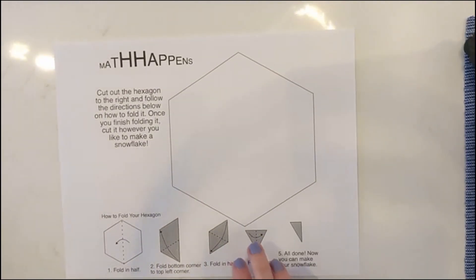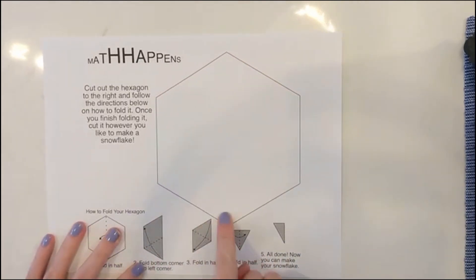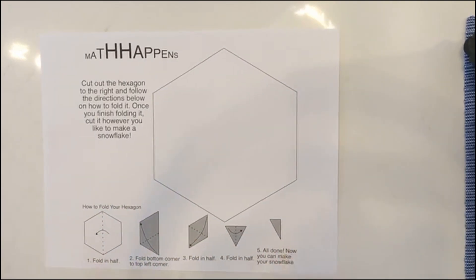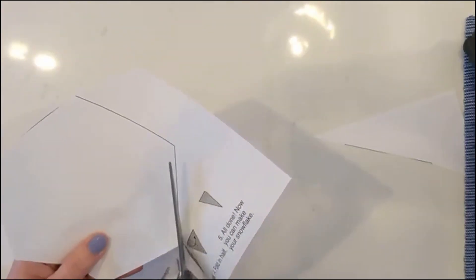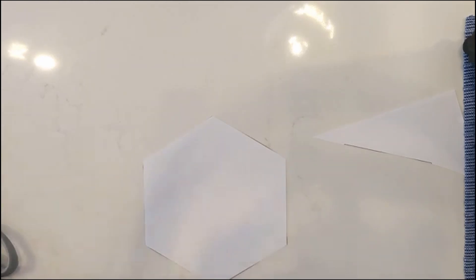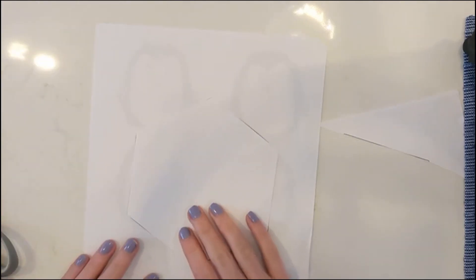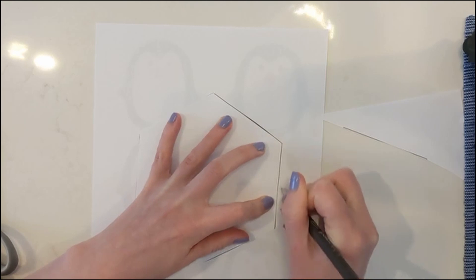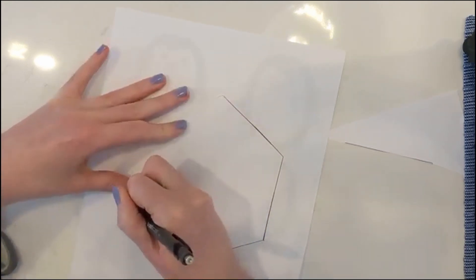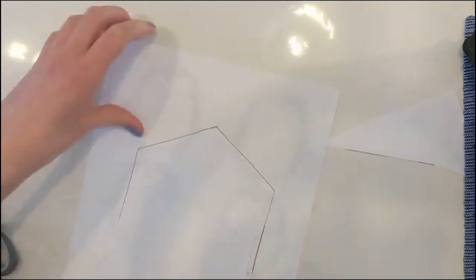Let's get started making our snowflakes. The first way we're going to work is with a hexagon template, which you'll find linked below. Go ahead and cut out the hexagon and fold it — the instructions below show how. If you don't have a printer or can't download it, you can just draw a hexagon on paper and cut it out; just make sure the sides are all even. I'm going to trace mine first so I have an extra copy to try again if needed.